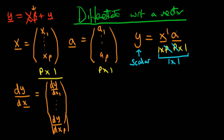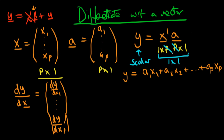What does this derivative actually equal in this case? We can find it by writing out y explicitly. If I take the transpose of x and multiply it by a, then assuming that each of x1 through xp and a1 through ap are themselves scalars, I can write this out as a1*x1 + a2*x2 + ... + ap*xp. Written in this form, it's easy to see that y itself is a scalar, since we're just multiplying scalar entries together and adding them up.